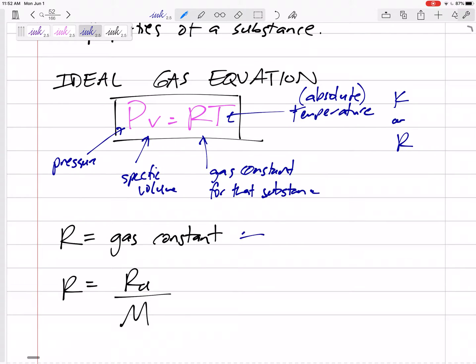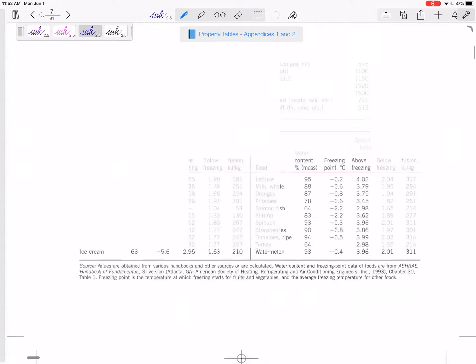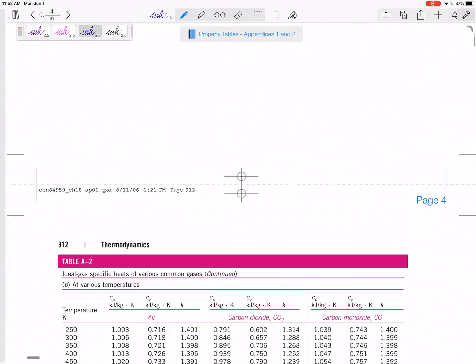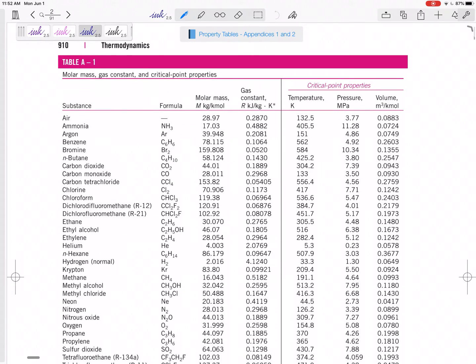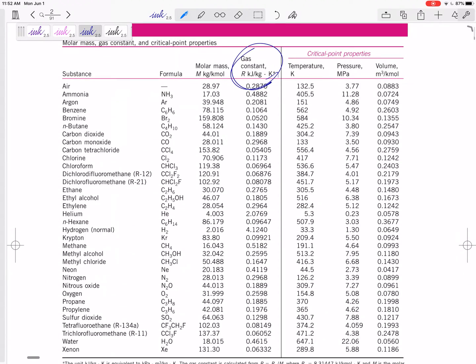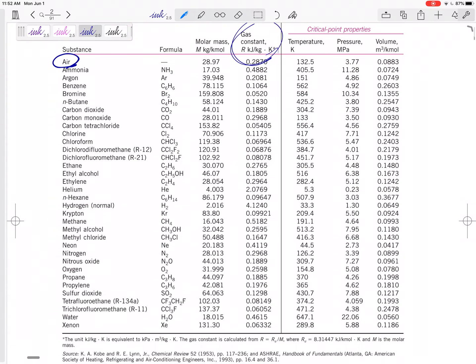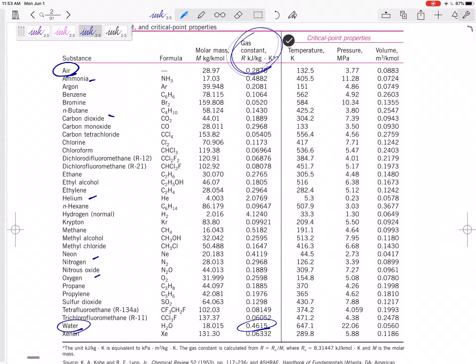All right. So R is the gas constant. This is in table A-1, table A-1. Let's go there. Let's go there. We haven't used table A-1 yet. Very beginning. All right. So table A-1, the gas constant right here for air, for water right here. So some of these, you know, ammonia, carbon dioxide, helium, nitrogen, oxygen. So that's our gas constant. Look at the units there, kilojoules per kilogram K, but they help us out here.